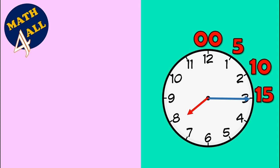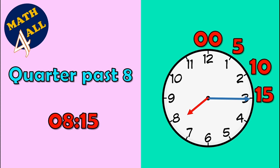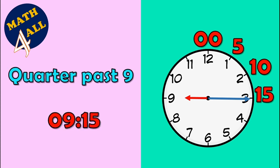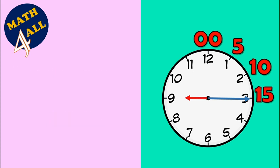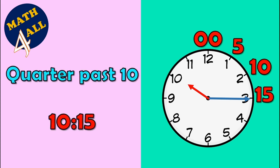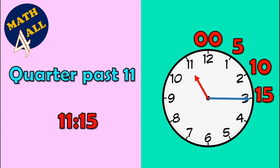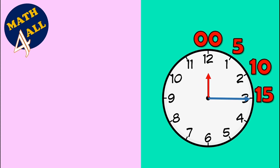What is the time? It's eight fifteen, or quarter past eight. What is the time? It's nine fifteen, or quarter past nine. What is the time? It's ten fifteen, or quarter past ten. What is the time? It's eleven fifteen, or quarter past eleven. One more time — it's twelve fifteen, or quarter past twelve.